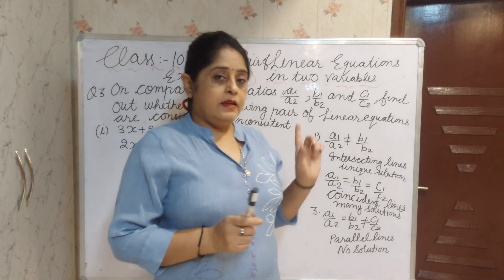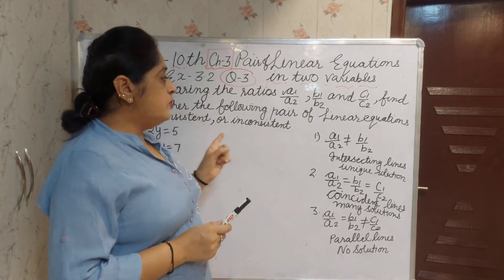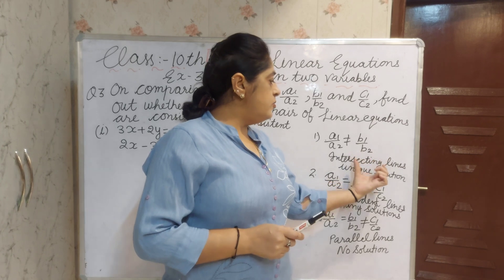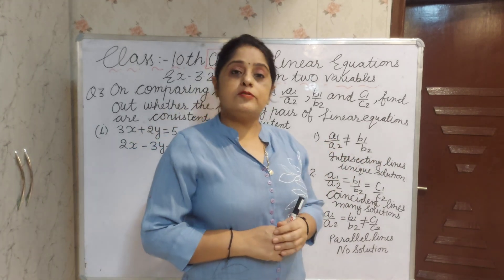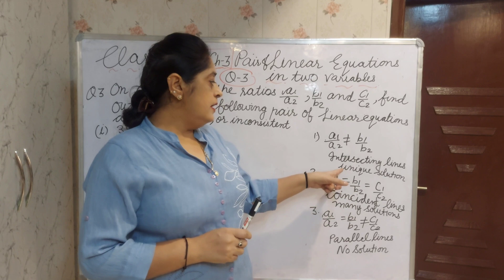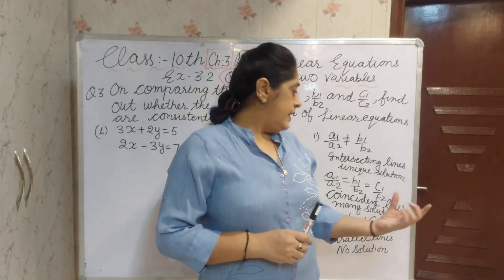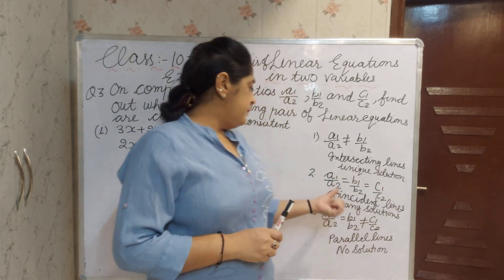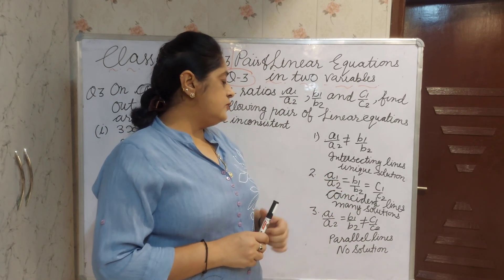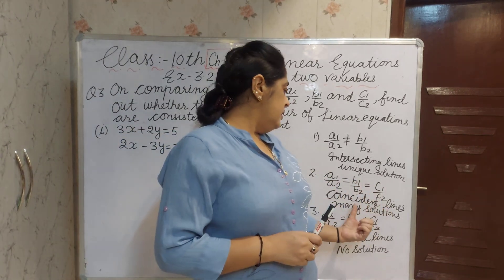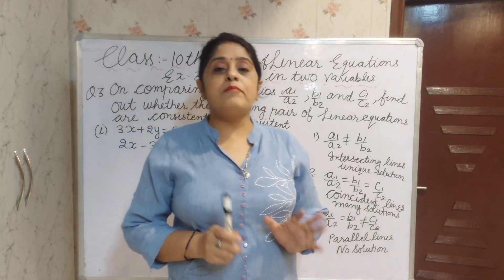First of all, I have explained question number 2. Same thing you have to learn: if A1 by A2 is not equal to B1 by B2, then intersecting lines on graph and unique solution. If A1 by A2 equals B1 by B2 equals C1 by C2, then coincident lines having many solutions.